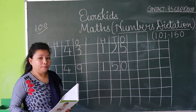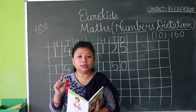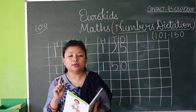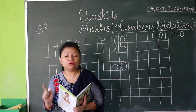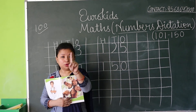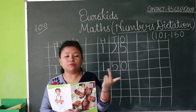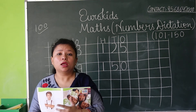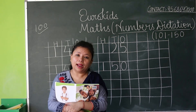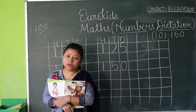Now my last number is 112. 112 — hundred means one, and 12 — how to write 12? One and two — 112.